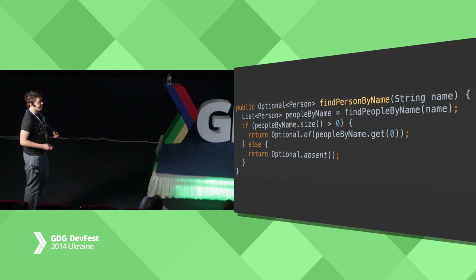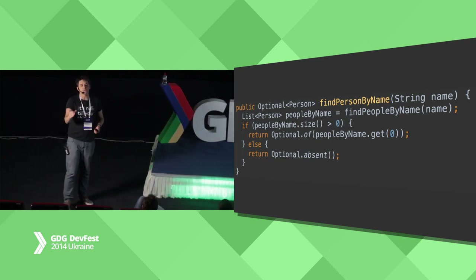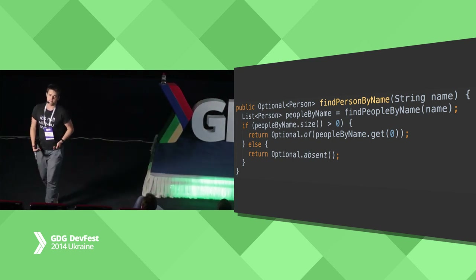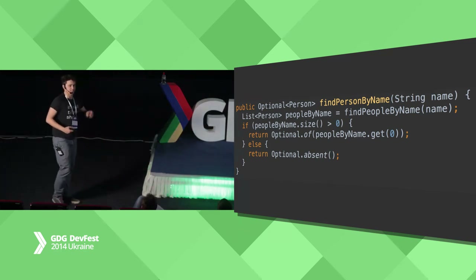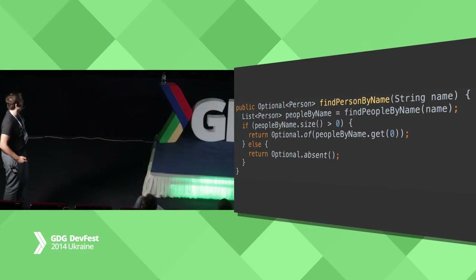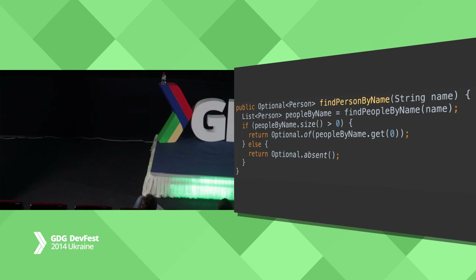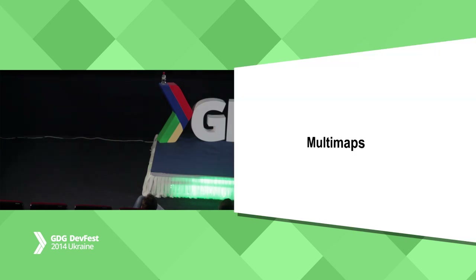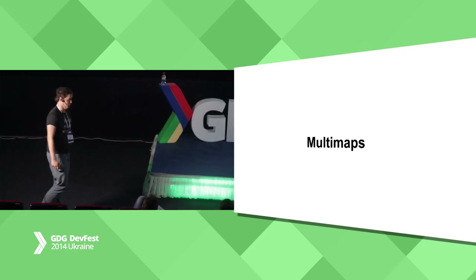So instead of returning something or null, we use the strong typing system to explicitly tell the caller of the method that it may happen that there will be no result. Very cool. So let's go for something less controversial — MultiMaps. This will be fast.